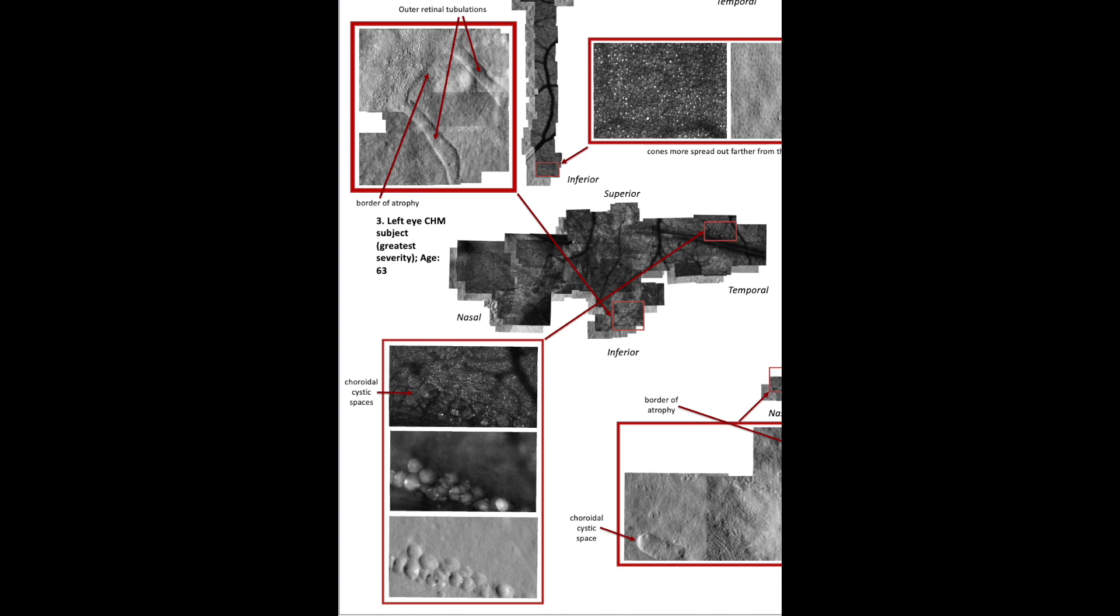The last patient in the bottom right shows the most advanced case of CHM, with the border of atrophy enveloping most of the retina. You can see how outer retinal tubulations are beginning to form and how clusters of cysts are forming in the choroid layer.